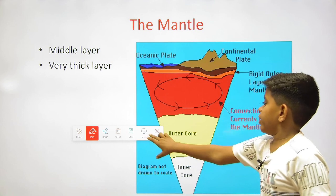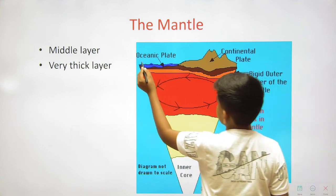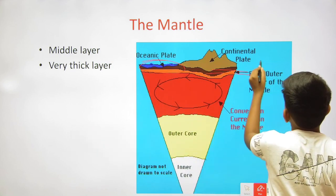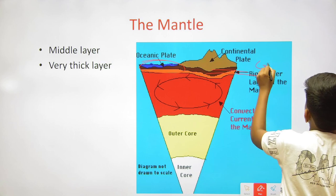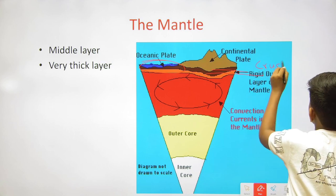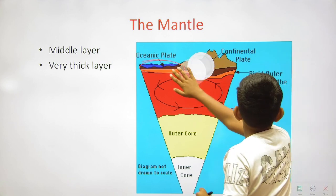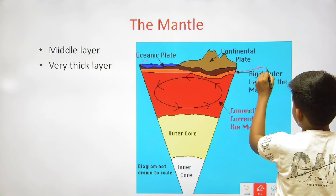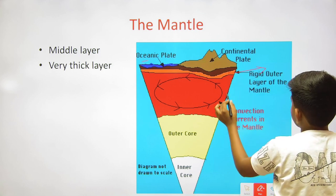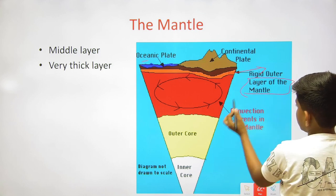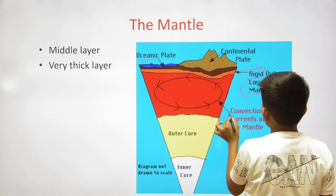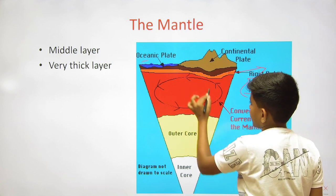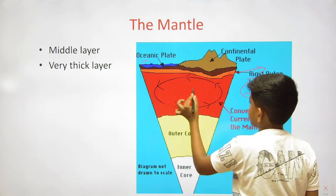There is the oceanic plate and the continental plate, which comes under the crust. The rigid outer layer of the mantle has convection currents — the magma flows inside.